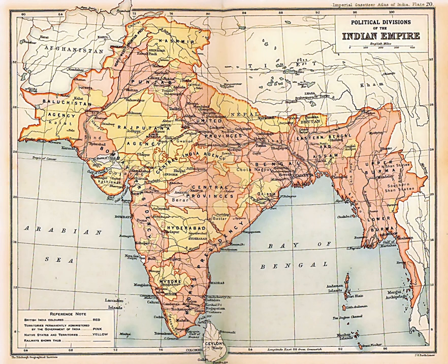The partition was set forth in the Indian Independence Act 1947 and resulted in the dissolution of the British Raj, as the British government there was called. The two self-governing countries of Pakistan and India legally came into existence at midnight on 14–15 August 1947. The partition displaced over 14 million people along religious lines, creating overwhelming refugee crises in the newly constituted dominions. There was large-scale violence, with estimates of loss of life varying between several hundred thousand and two million. The violent nature of the partition created an atmosphere of hostility and suspicion between India and Pakistan that plagues their relationship to the present.